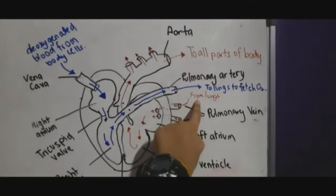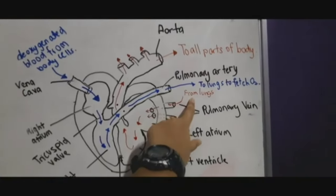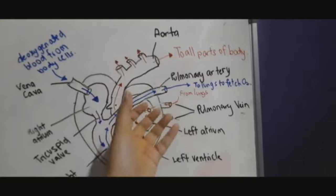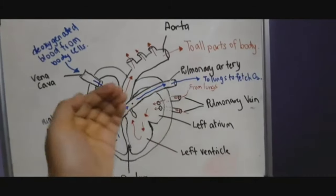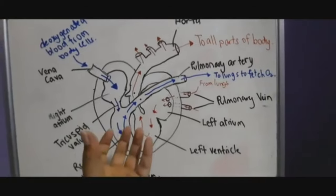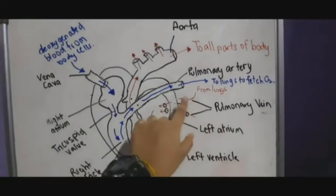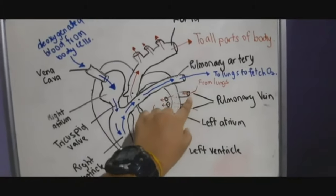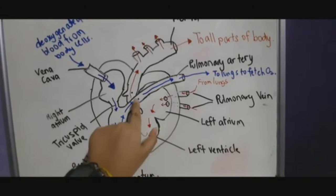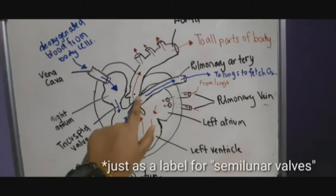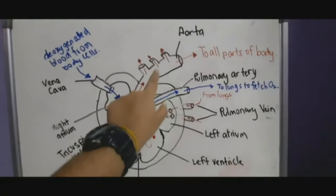The story starts from the lungs. When we inhale, oxygen enters the lungs and specifically the alveolus. Oxygen from the alveolus diffuses into the blood capillaries, making the blood oxygenated — forming oxyhaemoglobin. The oxyhaemoglobin flows from the lungs into the pulmonary veins, entering the left atrium and then into the left ventricle.